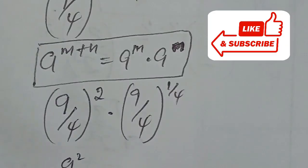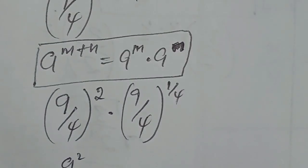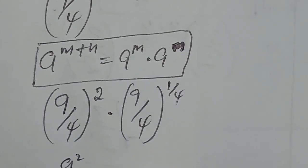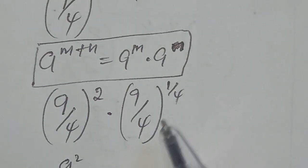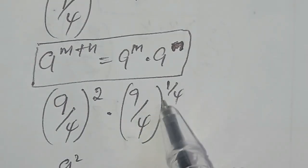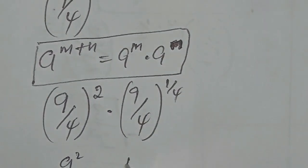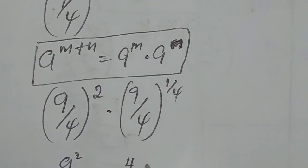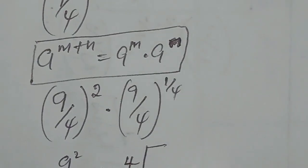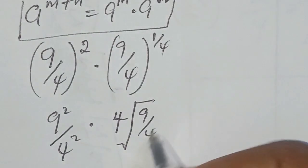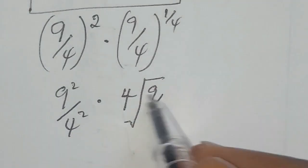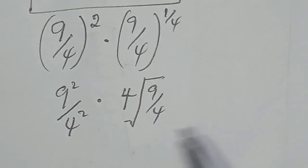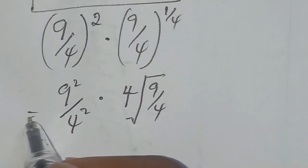Now we evaluate the square: we have 9 squared over 4 squared, multiplied by what we have here. The second factor can also be written as the fourth root of 9 over 4.